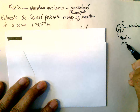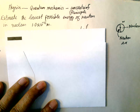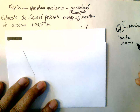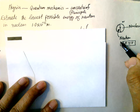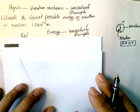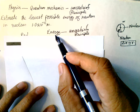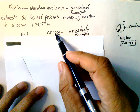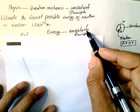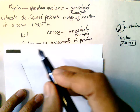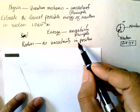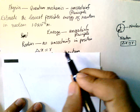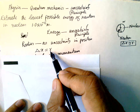The uncertainty in position, delta x, of the neutron inside the nucleus is equal to the radius of the nucleus. From this we can find out the energy using the uncertainty principle. So delta x is equal to R.